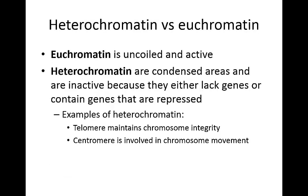There are two types of chromatin. The first is euchromatin, which is uncoiled and genetically active. Heterochromatin, in contrast, is condensed and genetically inactive — either because those regions lack genes themselves or they contain genes that tend to be repressed. Two examples of heterochromatin lacking genes are telomeres and centromeres. Telomeres maintain chromosome integrity and contain no genes. Centromeres are found at the center of the chromosome where the two sister chromatids attach to one another, and very few if any genes are found in this location.